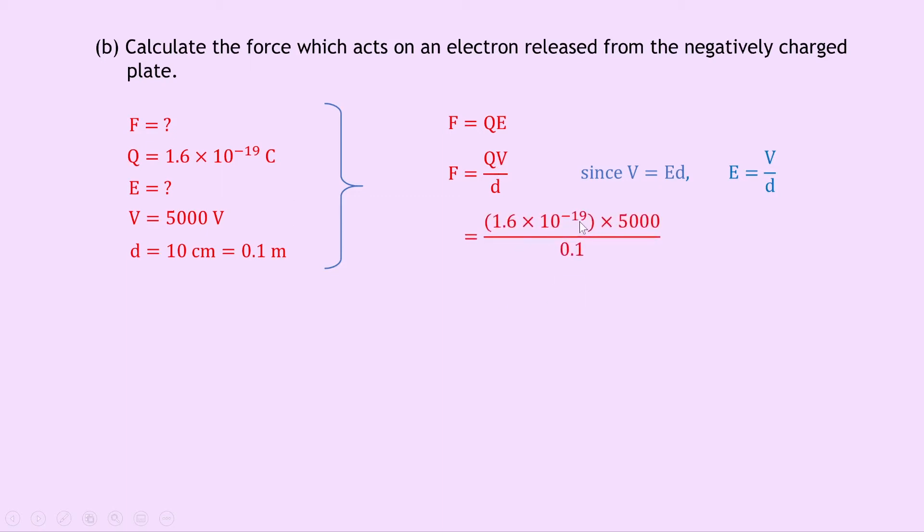So we get 1.6 times 10 to the minus 19 times 5,000 divided by 0.1, which gives us a final answer of 8 times 10 to the minus 15 newtons to the right. So remember our direction is needed because force is a vector.